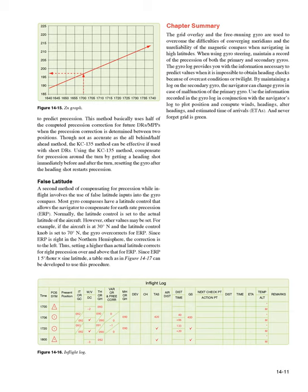False latitude. A second method of compensating for precession while in-flight involves the use of false latitude inputs into the gyro compass. Most gyro compasses have a latitude control that allows the navigator to compensate for earth rate precession (ERP). Normally, the latitude control is set to the actual latitude of the aircraft. However, other values may be set. For example, if the aircraft is at 30 degrees north and the latitude control knob is set to 70 degrees north, the gyro overcorrects for ERP. Since ERP is right in the northern hemisphere, the correction is to the left. Thus, setting a higher-than-actual latitude corrects for right precession over and above that for ERP. Since ERP equals 15 degrees per hour times sine latitude, a table such as in figure 14-17 can be developed to use this procedure.